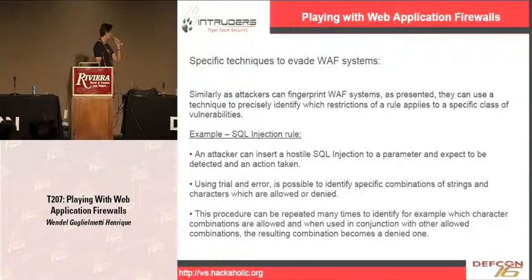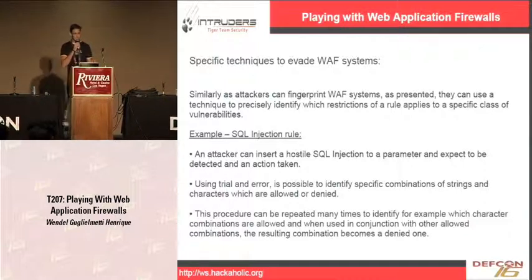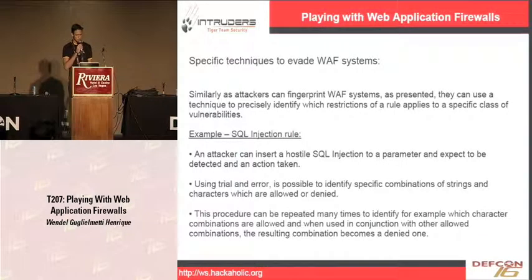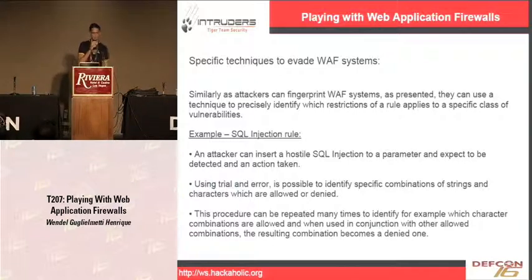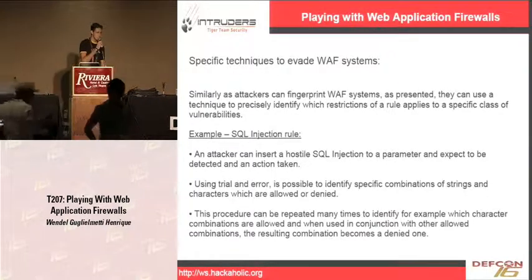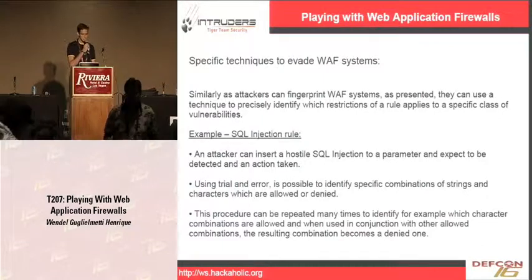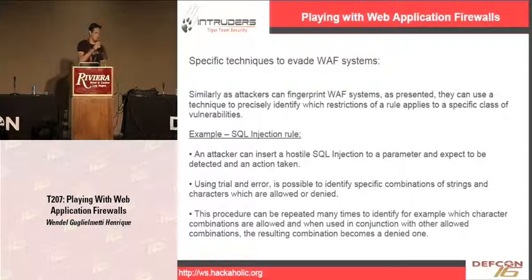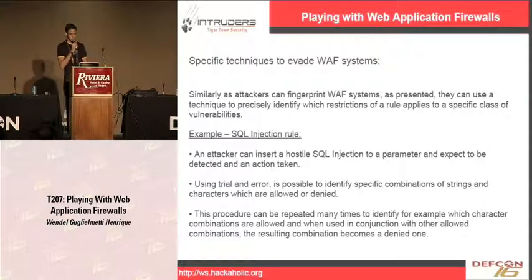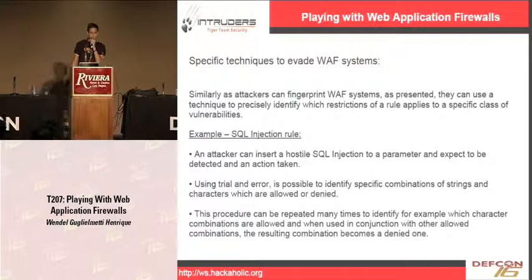Specific techniques to evade WAF systems: similar to how attackers can fingerprint WAF systems, they can use a technique to precisely identify which restriction of a rule applies to a specific class of vulnerability. An attacker can insert a hostile SQL injection to a parameter and it is expected to be detected and an action taken - for example a different HTTP error code returned, a page redirection, or simply generate an error, or the normal page be displayed depending on the web application firewall.